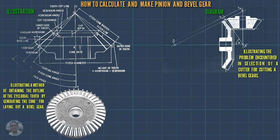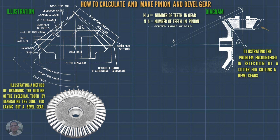Where A equals the number of teeth in the gear, and B equals the number of teeth in the pinion. That is the center angle of the gear.